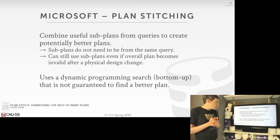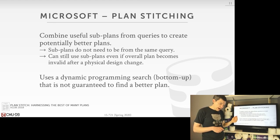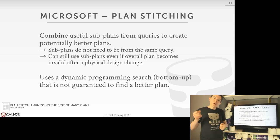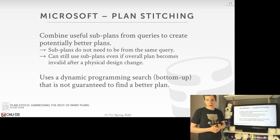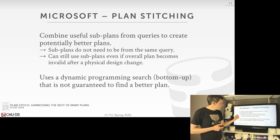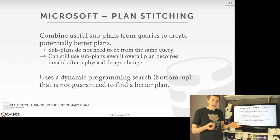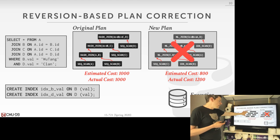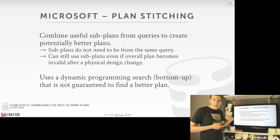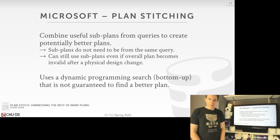The paper assigned for reading from Microsoft is called 'Plan Stitching.' The high-level idea is: if we recognize our query is running slower than query plans we've seen in the past, rather than throwing away the entire new query plan and reverting to the old one, maybe there are elements or sub-plans within the newer plan we'd actually want to retain — that can lead us toward a more optimal plan. Also, the sub-plans you borrow don't need to be from the same query; as long as they're logically equivalent, you can take bits and pieces from other queries.